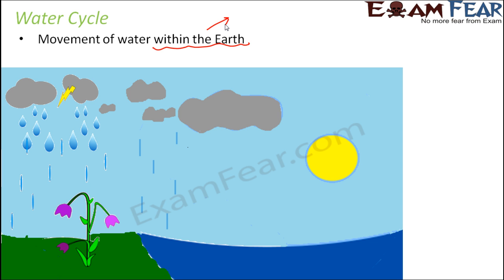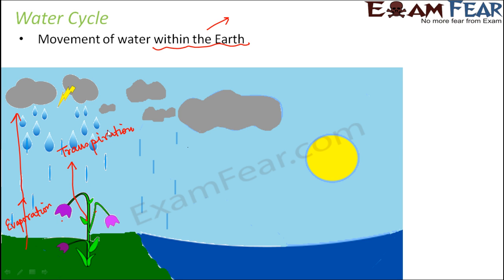Let us see how exactly the water cycle or the circulation of water takes place. From the land, evaporation takes place, because of which liquid water gets converted to water vapor. Evaporation is one such process, and the other process is transpiration. As a result of evaporation and transpiration, water vapor gets collected in the atmosphere.